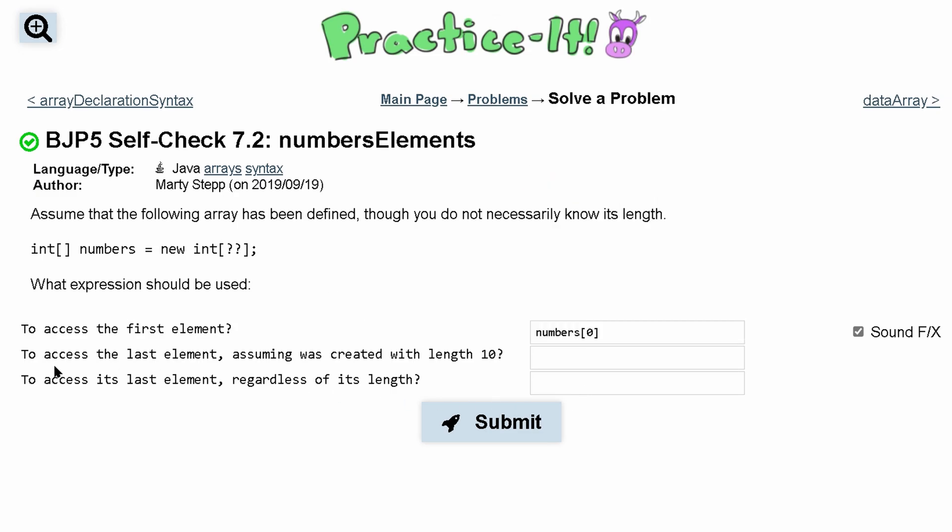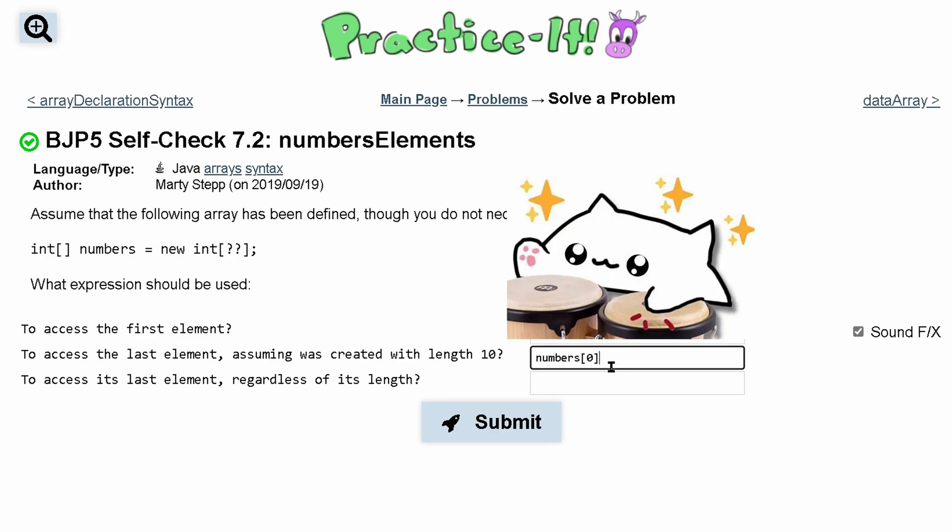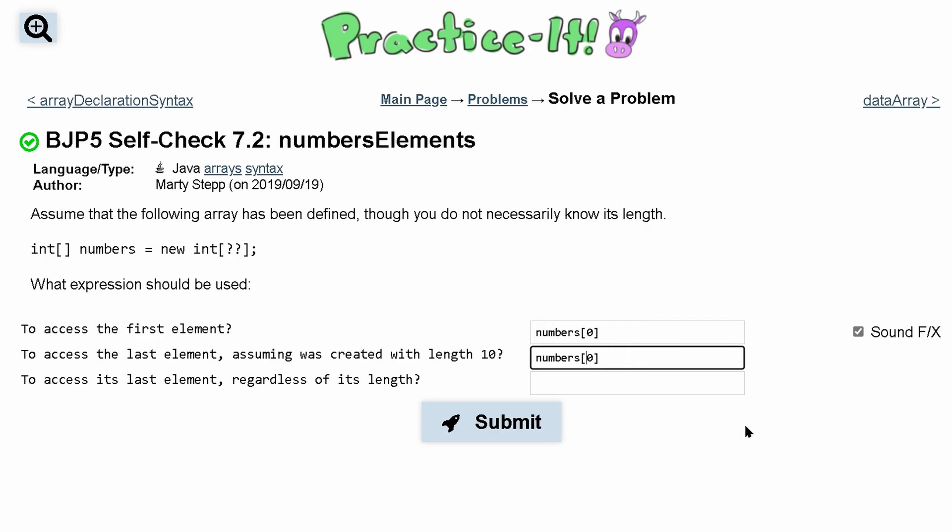To access the last element assuming it was created with length 10, well if we want the last element we know the length is 10, we can just do the same thing but instead we are going to have 9. Because length is the same thing as index but length is 1 more than index, because length starts at 1 but index starts at 0.